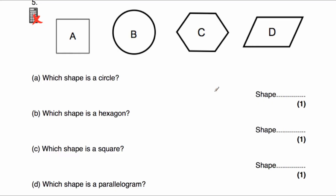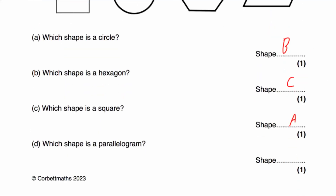Question number five: we've got a square, a circle, a hexagon, and a parallelogram. Which shape is a circle? Shape B is a circle. Which shape is a hexagon? A hexagon has six sides, and shape C has one, two, three, four, five, six sides — so that's shape C. Which shape is a square? That's going to be A. And which shape is a parallelogram — or as I like to think of it, a pushed rectangle — that quadrilateral with two pairs of parallel lines? Shape D is a parallelogram.